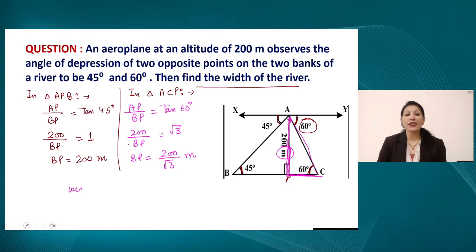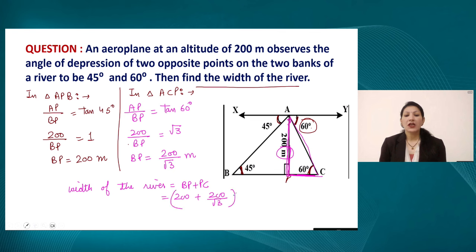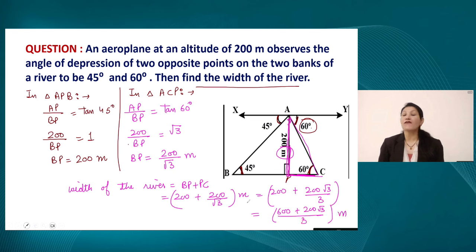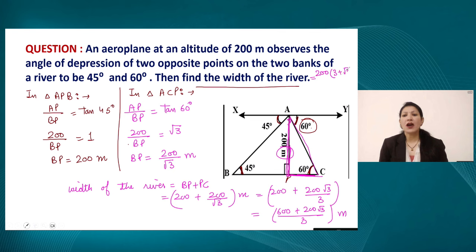The width of the river is BP plus PC, which equals 200 plus 200 upon root 3 meters. This can also be written as 200 root 3 divided by 3, or taking 3 as LCM: 600 plus 200 root 3 whole divided by 3 meters. Taking 200 as common, the final answer is 200 into (3 plus root 3) whole divided by 3 meters.